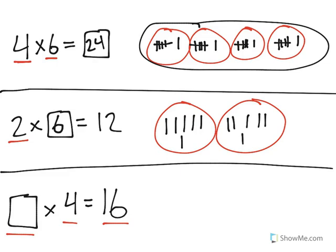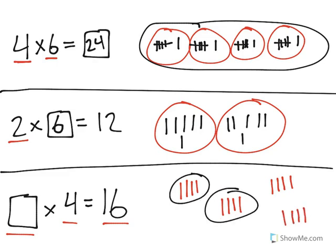So what I'll do is draw groups of 4 here. Counting: 1, 2, 3, 4, 5, 6, 7, 8, 9, 10, 11, 12, 13, 14, 15, 16. I stop at 16, and I can see that I had a total of 4 groups.